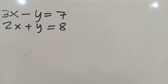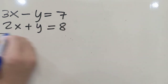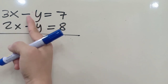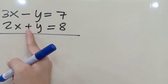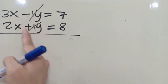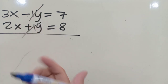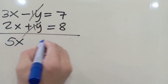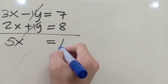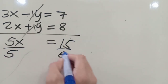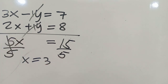By the elimination method, let's just add the two equations. Since y has opposite signs — negative and positive — negative 1y plus 1y is 0, so they cancel. Then 3x plus 2x is 5x, equal to 7 plus 8, which is 15. Dividing both sides by 5, we get x is equal to 3.